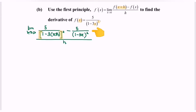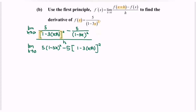Next, I'm going to equate the denominator. So we will have the limit when h approaching 0: 5 multiplied with 1 minus 3x bracket squared, minus 5 bracket with 1 minus 3(x plus h) bracket squared, all over h times (1 minus 3(x plus h)) bracket squared, multiplied with 1 minus 3x bracket squared.